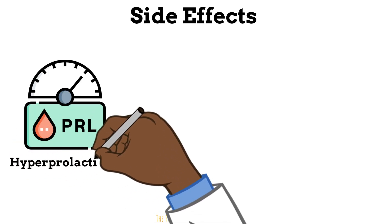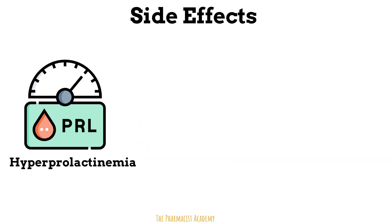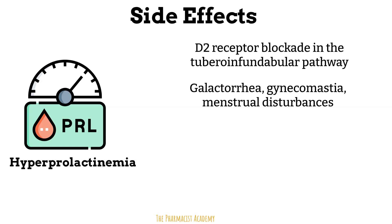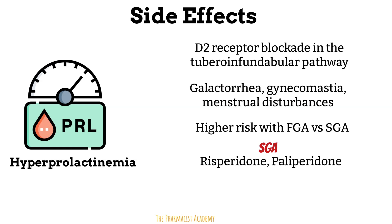Next, hyperprolactinemia. Prolactin is a hormone responsible for lactation, breast tissue development, and milk production. Dopamine normally inhibits the release of prolactin; by blocking D2 receptors in the tuberoinfundibular pathway, antipsychotics lead to increased prolactin secretion, resulting in galactorrhea, gynecomastia or enlargement of male breast tissue, and menstrual disturbances. The risk is generally higher with first generation antipsychotics versus second generation, but within the class it's more common with risperidone and paliperidone. For first generation antipsychotics, the risk is higher with haloperidol and fluphenazine. If prolactin elevation is a concern, consider aripiprazole or quetiapine, which have minimal effects on prolactin levels.